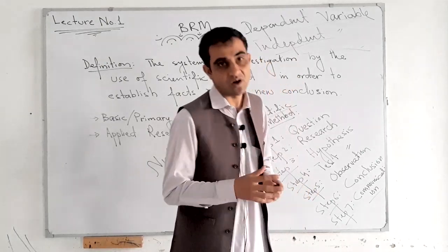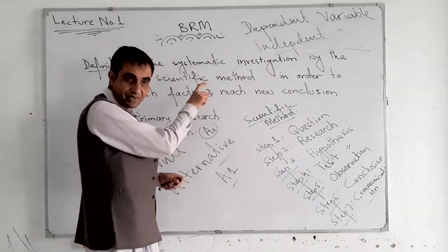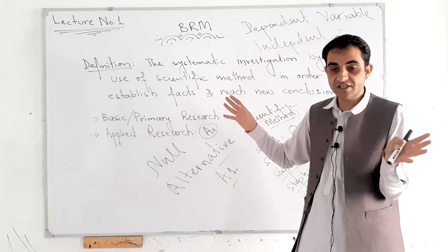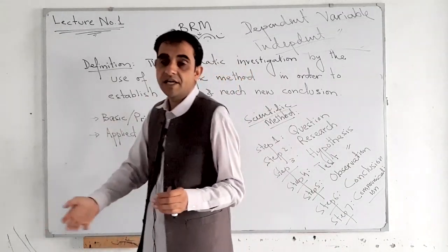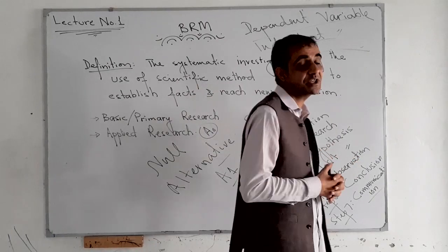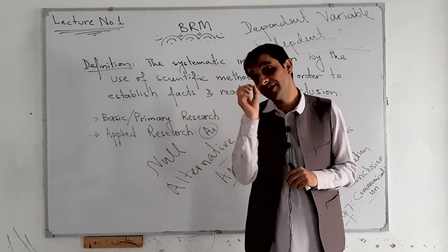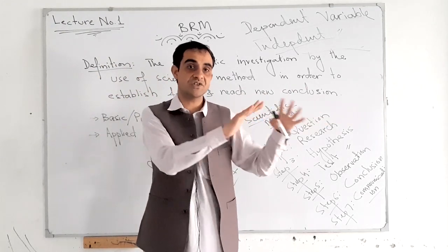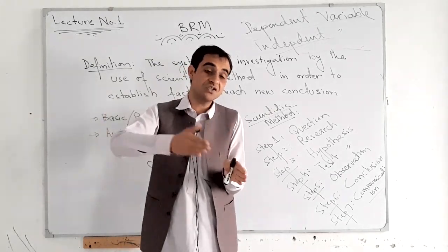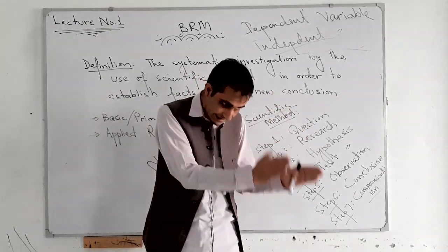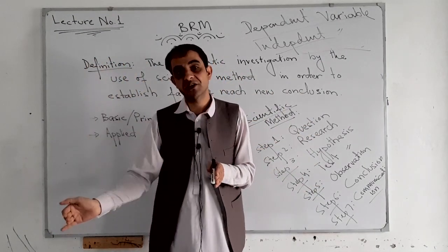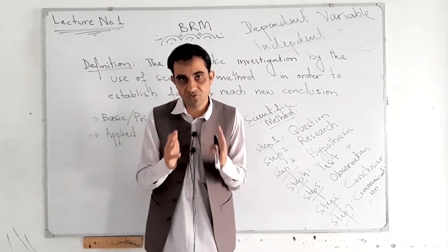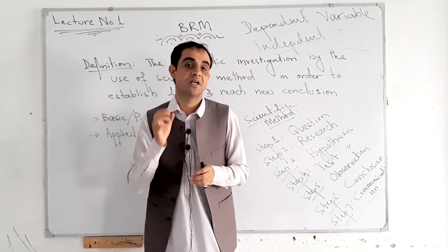This is called research — we are using the scientific method, which is a process by which we are converting data into information. In common language there is no difference between data and information, but in research there is a difference: data is the raw information. In the research process, we are using the scientific method to convert this raw data into valid, scientific information. This was your first class of BRM — Business Research Methods. Thank you very much, students. We will see you in the next class.